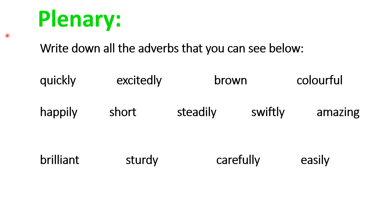That brings us to today's plenary. I would like you to write down all of the adverbs that you can see from the list of words below. Pause the video, write them down or discuss them, and then we'll go through the answers. Here are the answers — hopefully you wrote down: quickly, excitedly, happily, steadily, swiftly, carefully and easily. Well done if you got all of those.